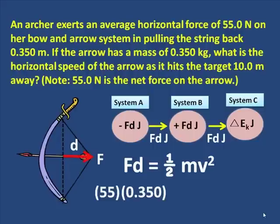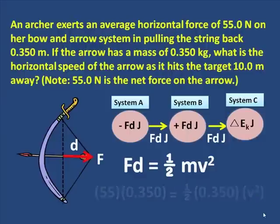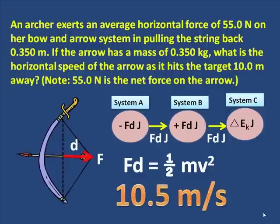Well it's 55 times 0.350 meters. It equals one half times 0.350 kilograms times the velocity squared. So we solve very simply for the velocity and we get 10.5 meters per second.